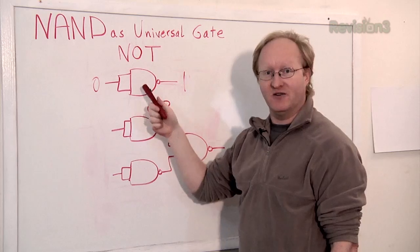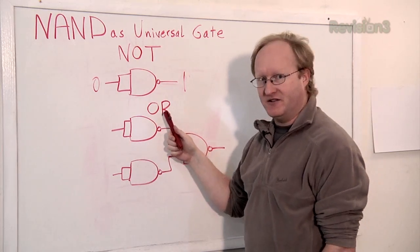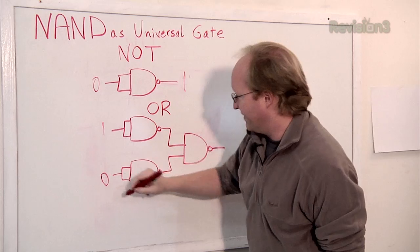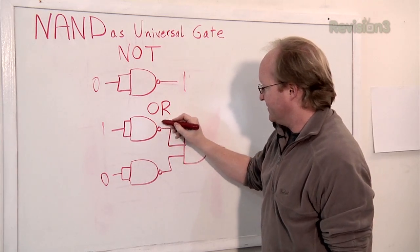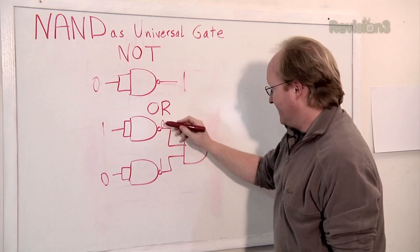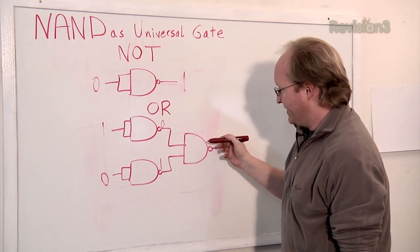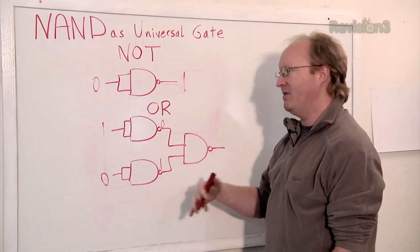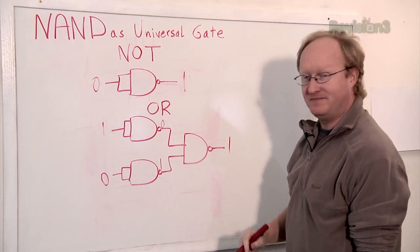So we've created a gate using a different gate. We can also create an OR gate using NAND gates. Say we have a one here and a zero here. So one and one is one, but inverted to zero. Zero and zero is inverted to one. This comes in here. This NAND gate would be untrue because the conditions aren't met, so it would be a zero output. But it gets turned into a one because it's inverted and we get the correct result.